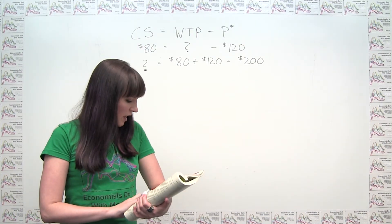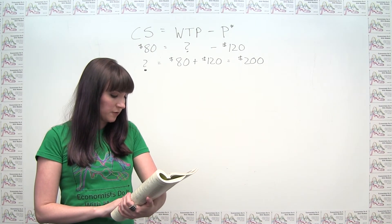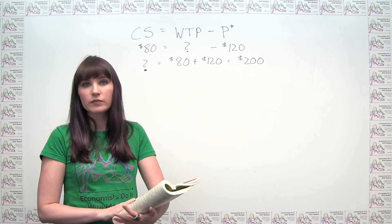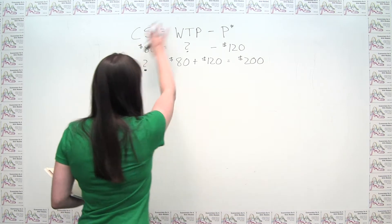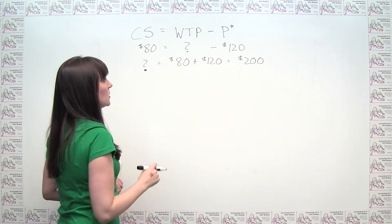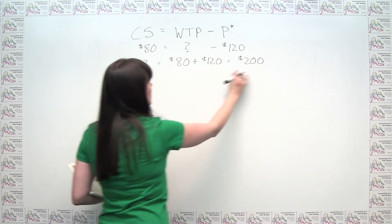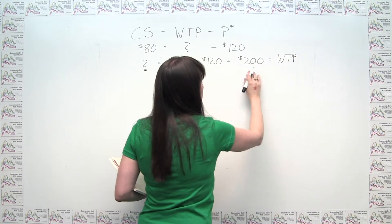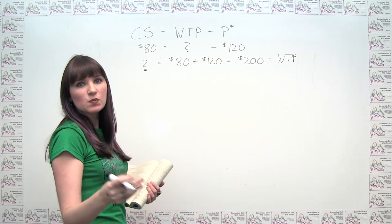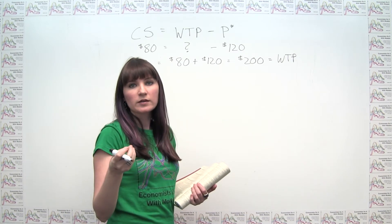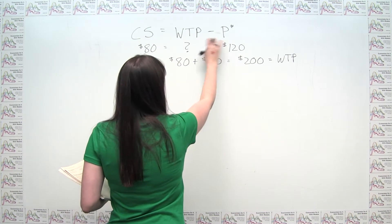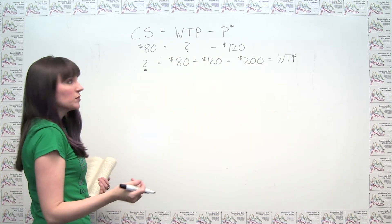Part B of the question asks, if she had bought the iPod on sale for $90, what would her consumer surplus have been? So again, we can just plug in what we know here. Well now that we know that her willingness to pay is $200, or equivalently, that she values this particular iPod at $200, we can then plug it into the formula here and calculate her new consumer surplus.